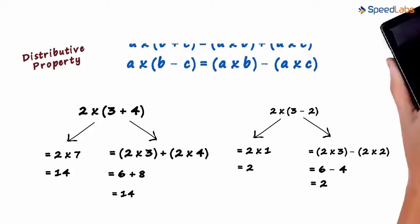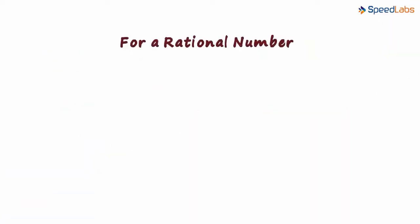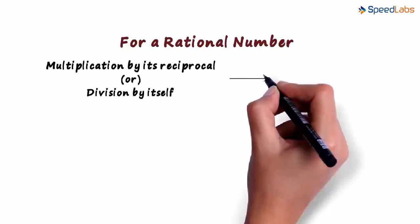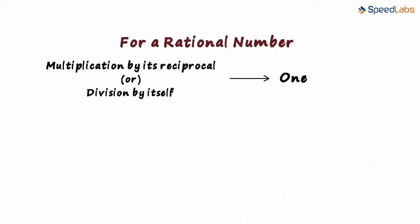And here's the last property. For any rational number, multiplication by its reciprocal or division by itself will always result in a 1. What does this mean?